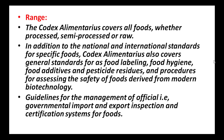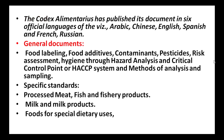The Codex Alimentarius has published its documents in six official languages: Arabic, Chinese, English, Spanish, French, and Russian. General documentation issued covers food labeling, food additives, contaminants, pesticides, risk assessments, hygiene through the Hazard Analysis and Critical Control Point (HACCP) system, and methods of analysis and sampling.